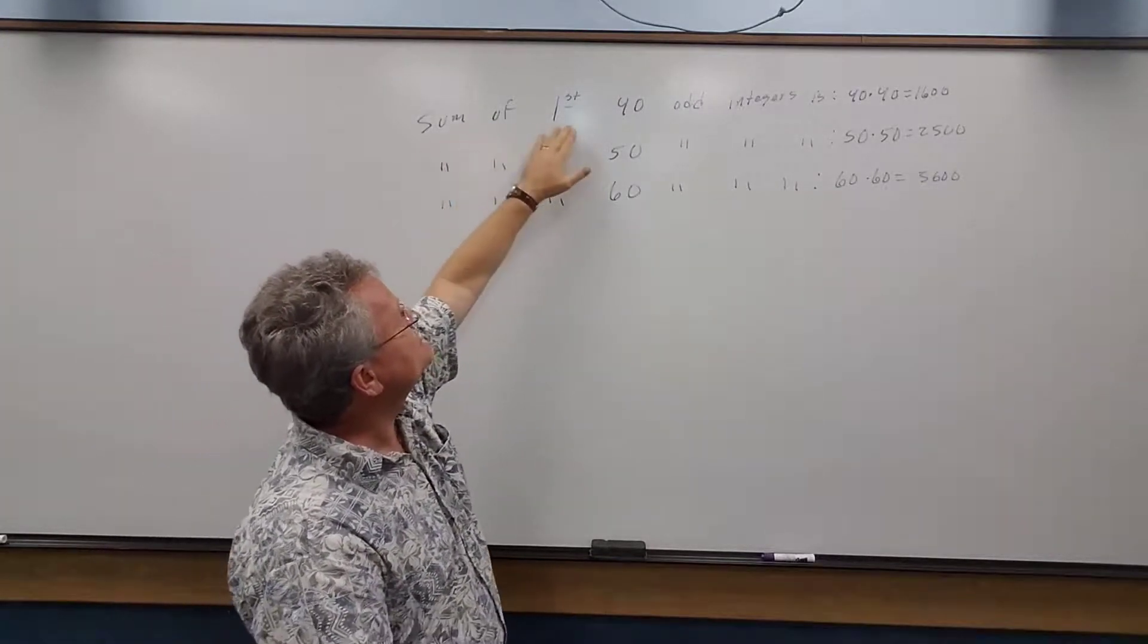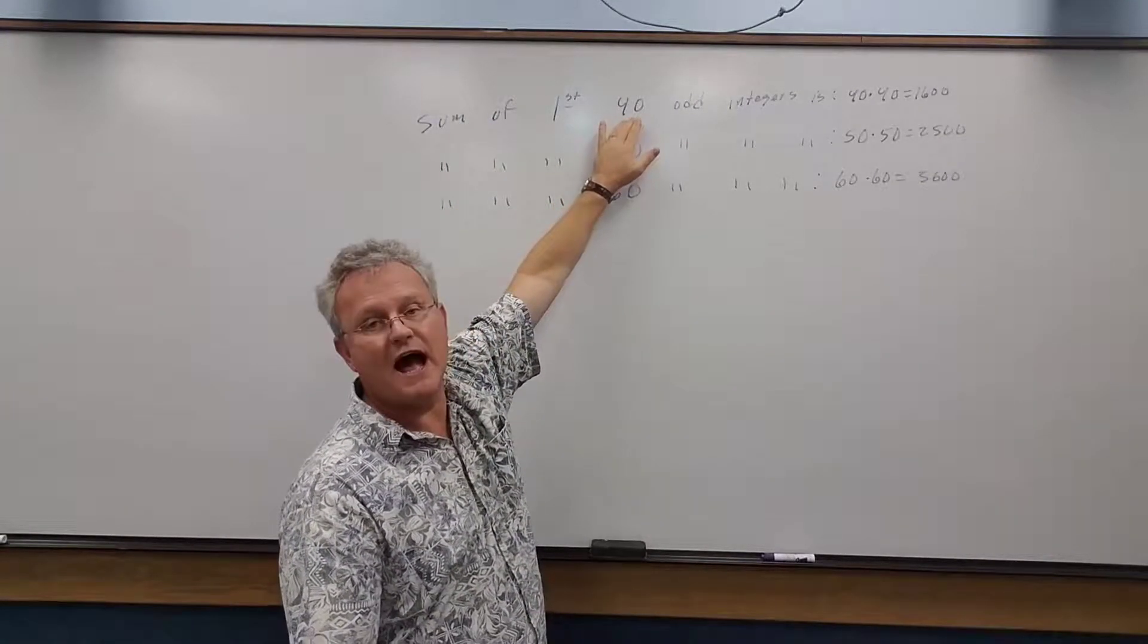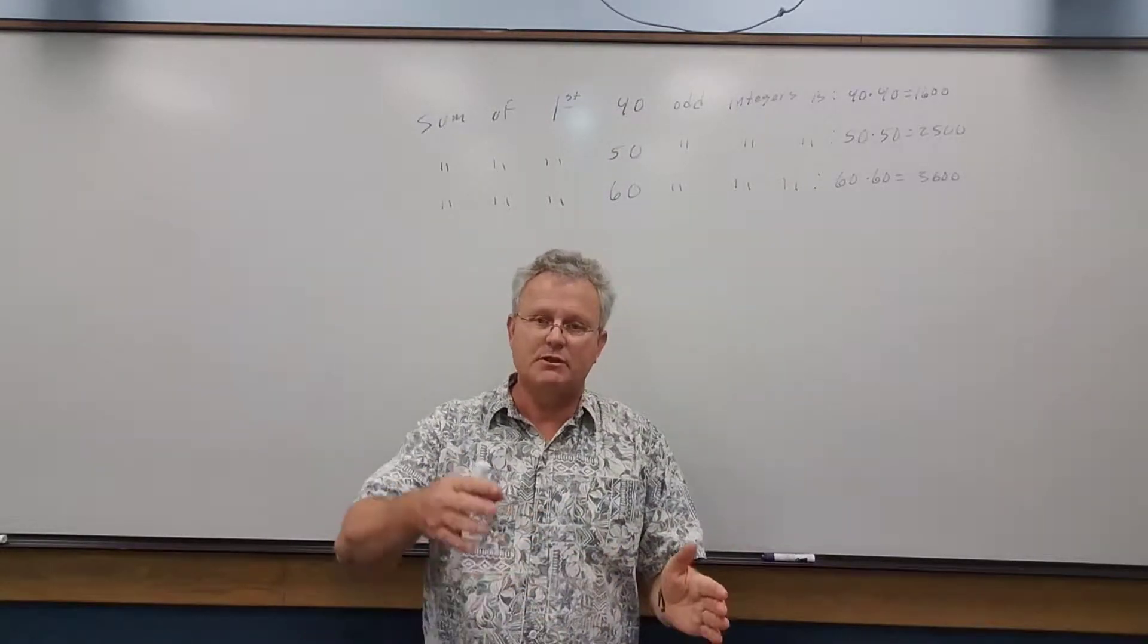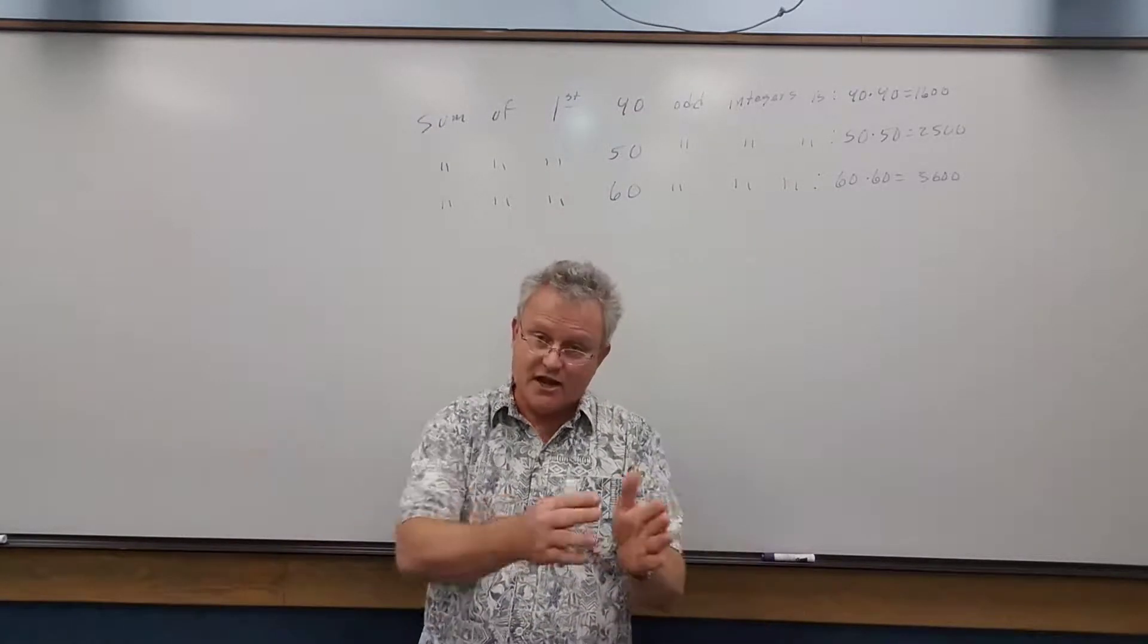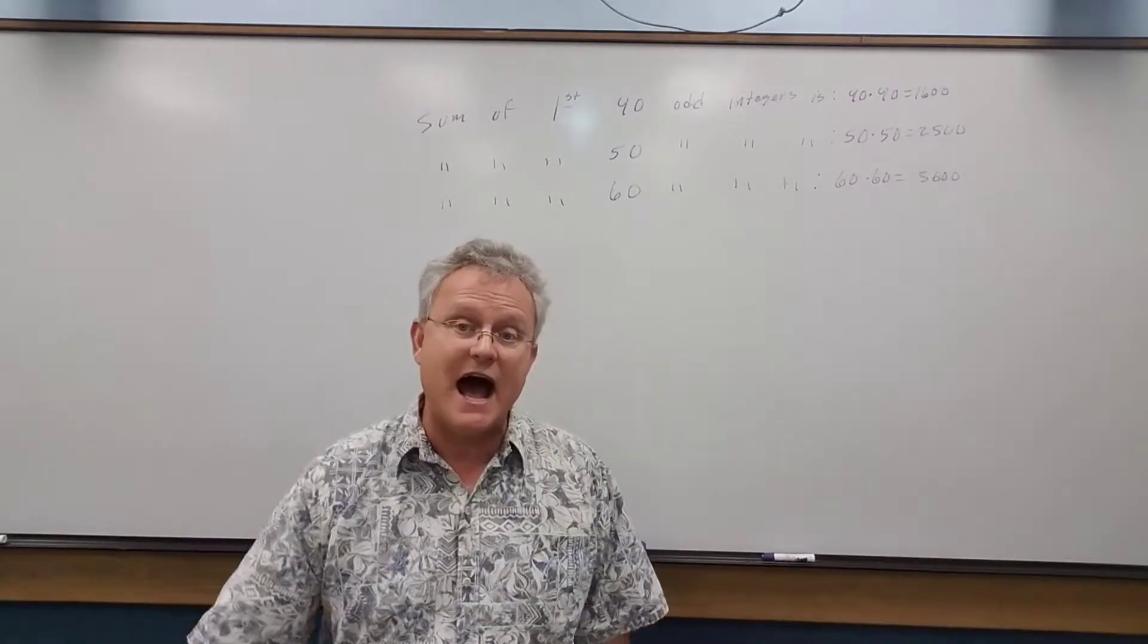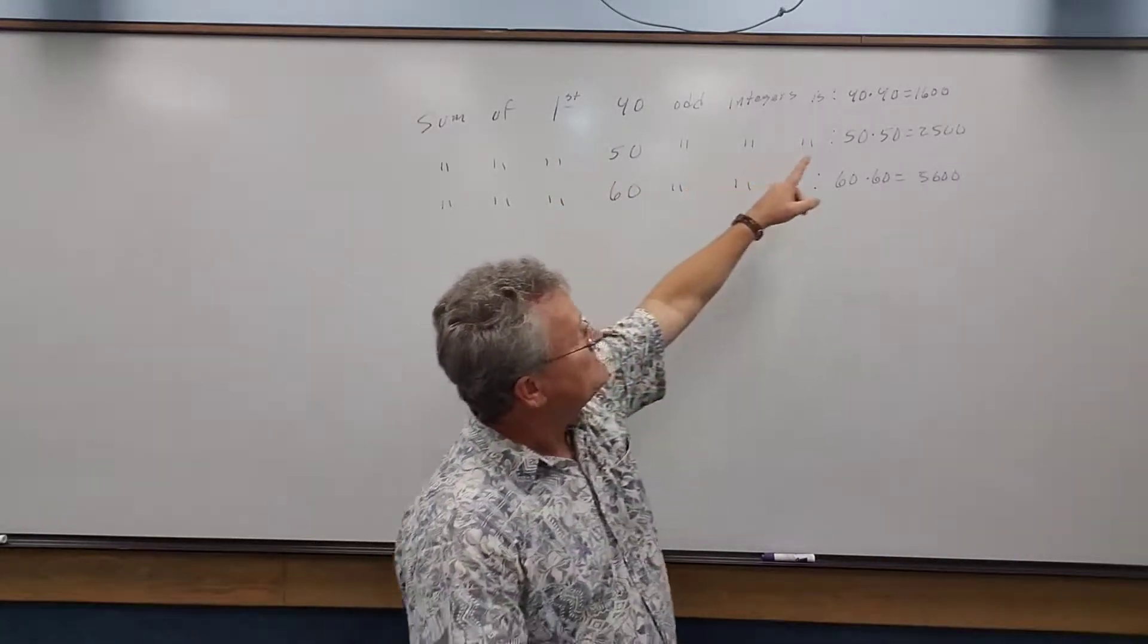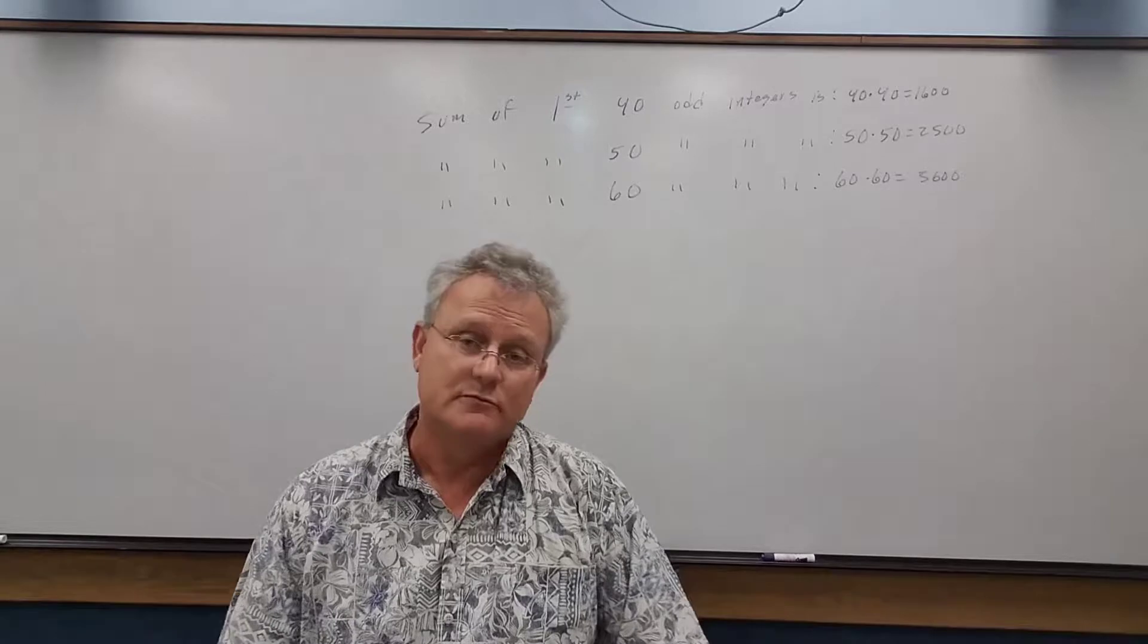It turns out that the sum of the first 40 odd integers, 1 plus 3 plus 5 plus 7 plus 9, the first 40 odd integers is just 40 times 40, which is 1600.